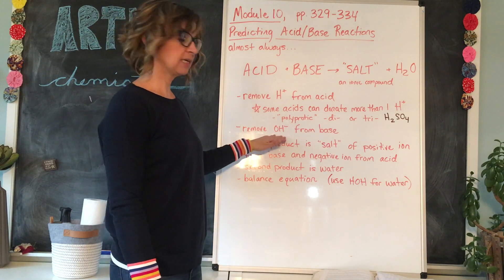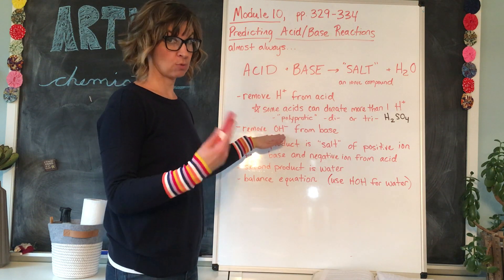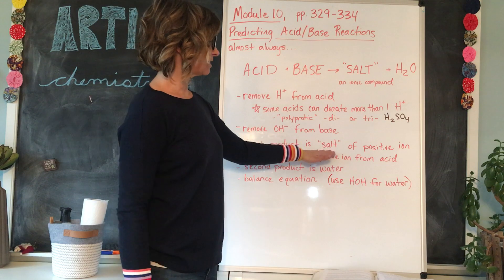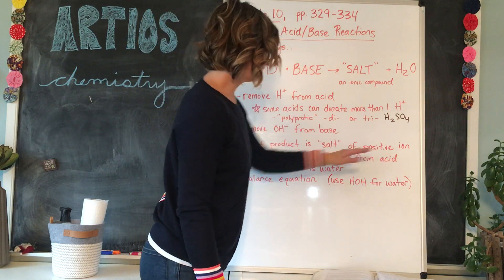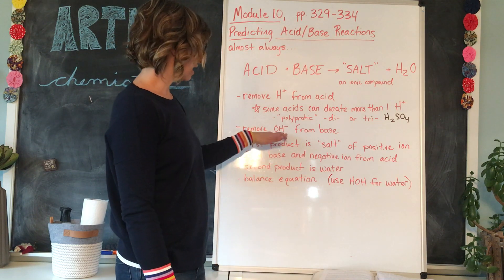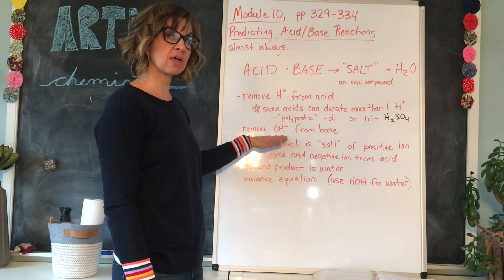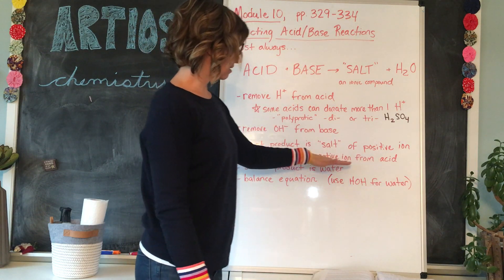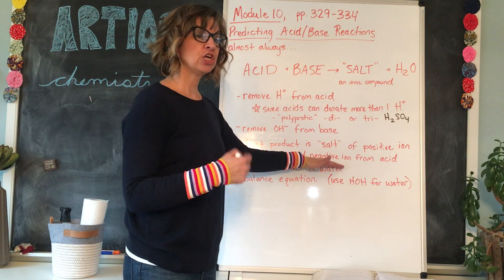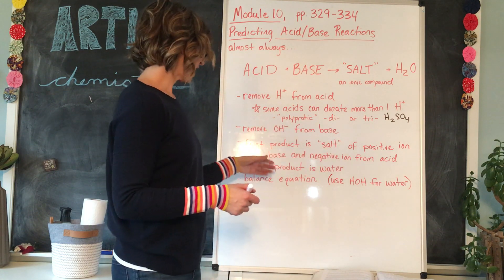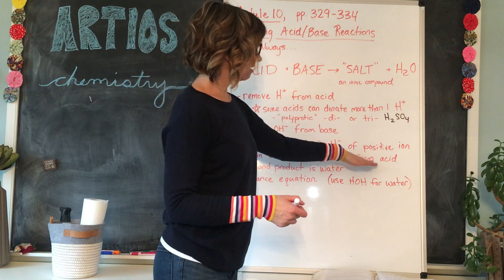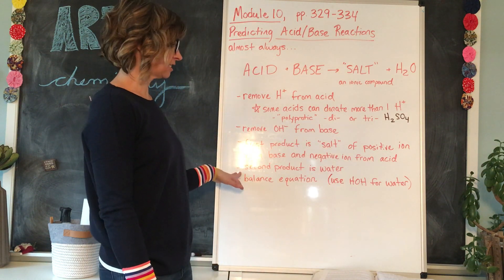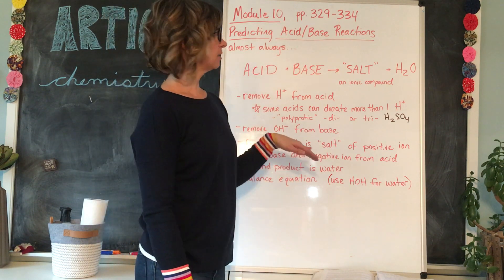After you remove the H⁺ from the acid, then you remove the OH⁻, the hydroxide ion, from the base, because most bases have the hydroxide ion in them. The first product you list is the salt. It is made of the positive ion from the base — when you take away the OH⁻, you're left with a positive ion — and the negative ion from the acid. When you take away the H⁺ from the acid, you're left with a negative ion. So that positive ion from the base and the negative ion from the acid join together to form the salt.